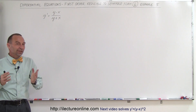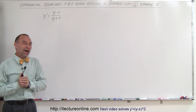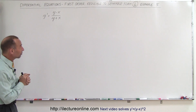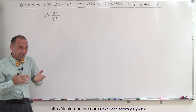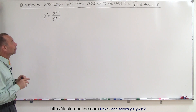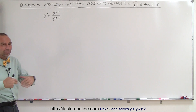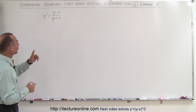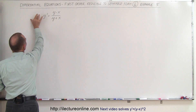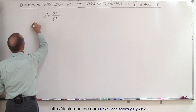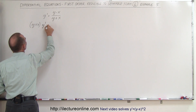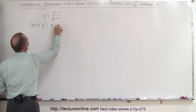Welcome to ElectronLine. Here is another example of how to apply this special technique where we have a first-order differential equation that is at first not separable. If we make the right substitution, we're going to be able to separate the variables and integrate both sides. The first thing we'll want to do is move the denominator over to the other side, giving us y plus x times y prime is equal to y minus x.